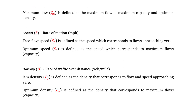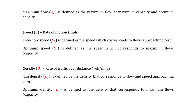Next is speed, denoted by S, technically a velocity in miles per hour. There are two types. Free flow speed, SF, is the speed when flow approaches zero — there's no congestion and vehicles can maneuver freely at the design speed. Optimum speed, S-naught, is the speed corresponding to maximum flow, i.e., the speed at capacity.